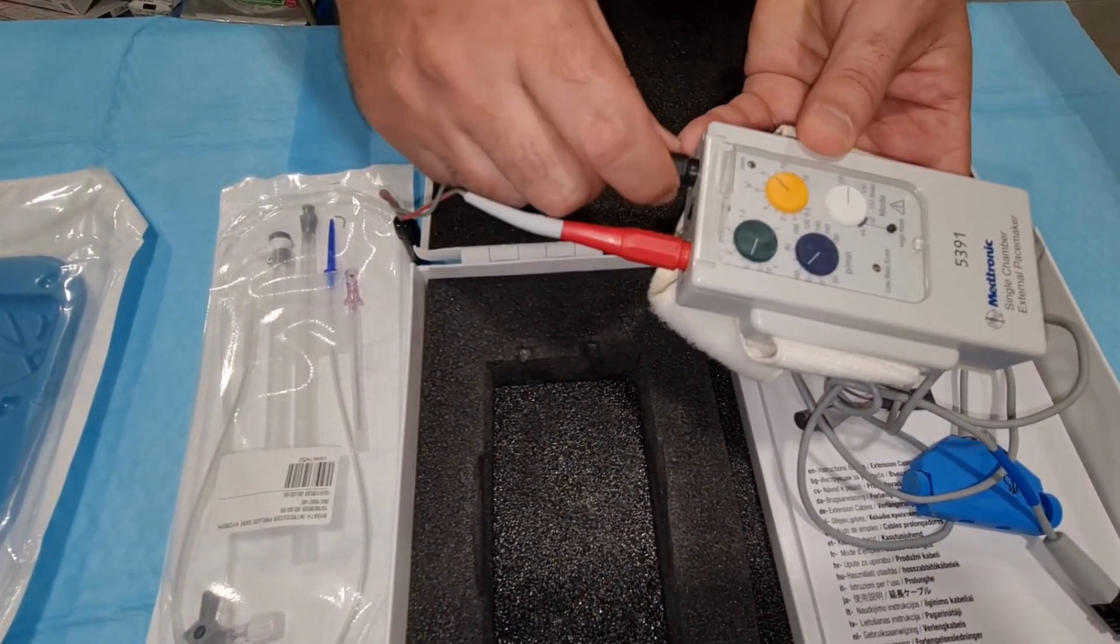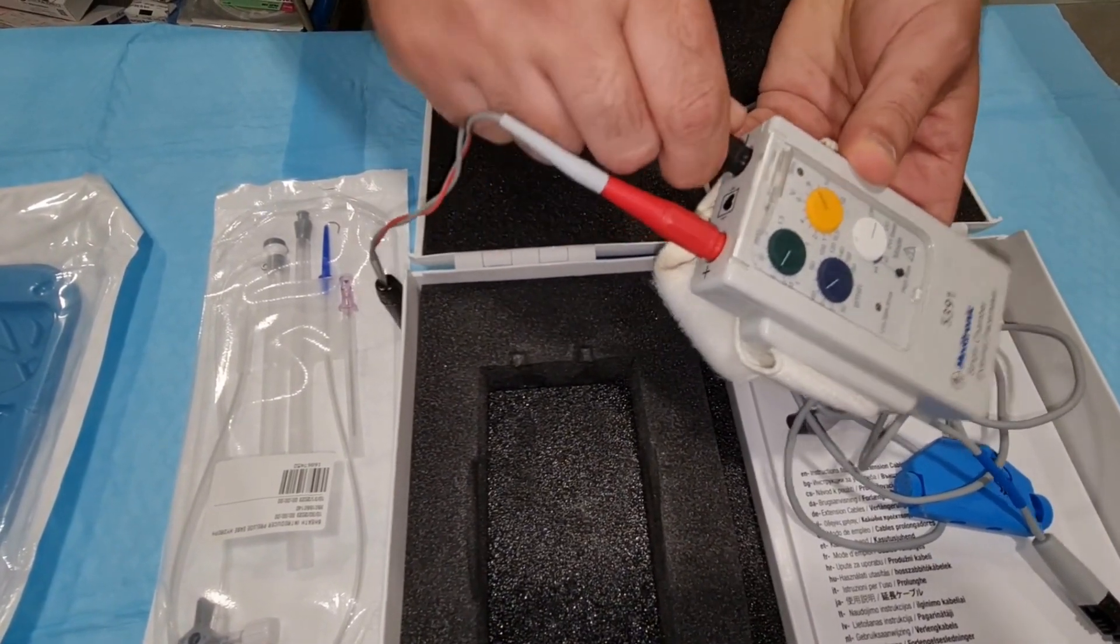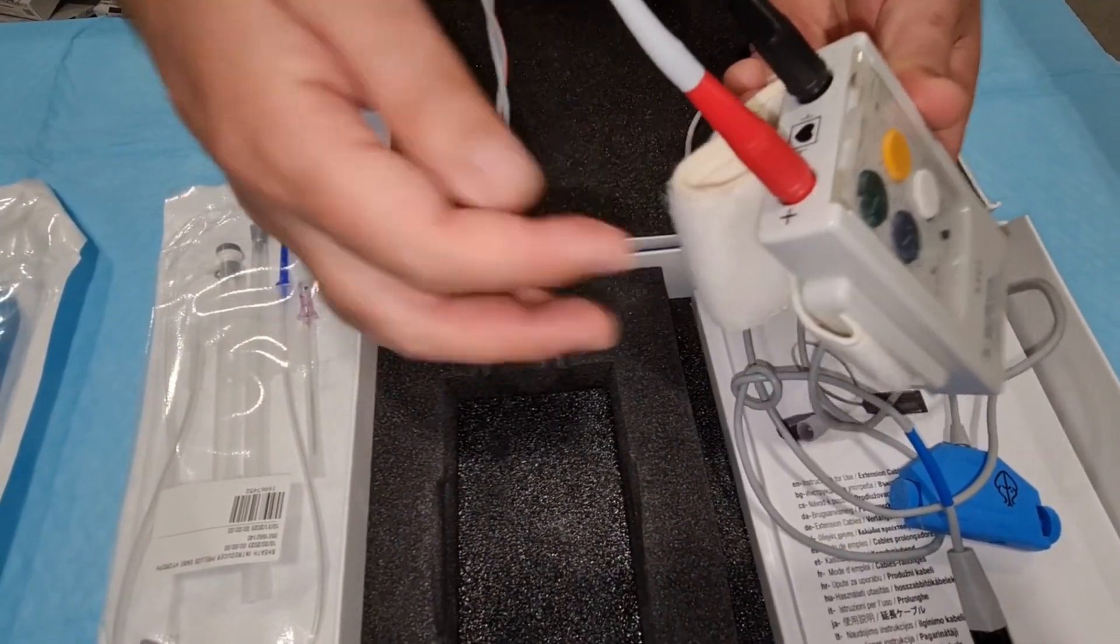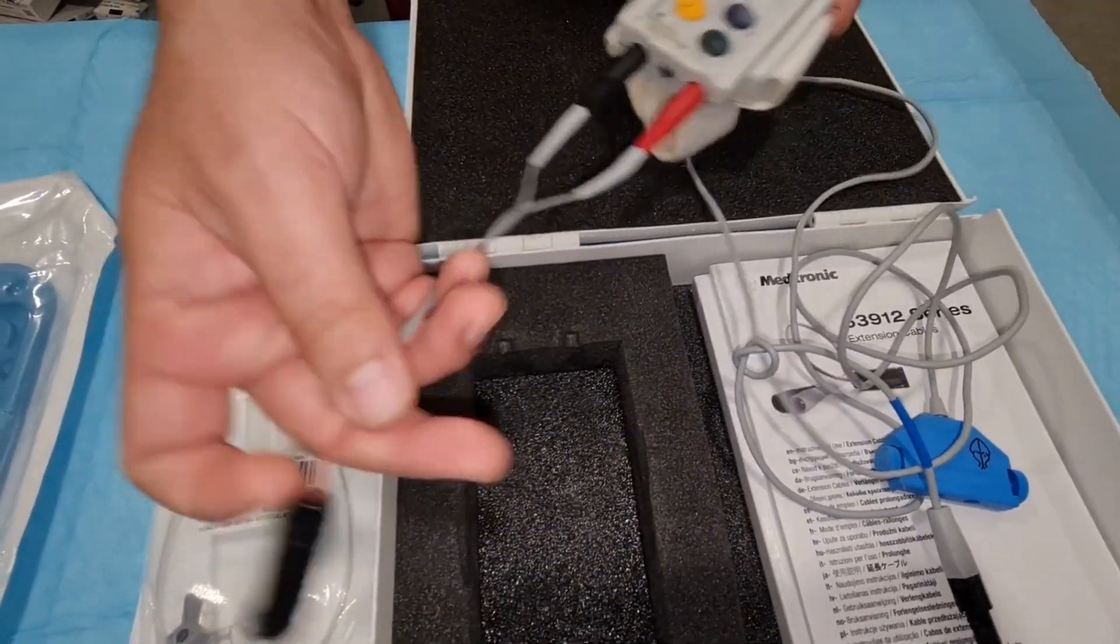Similarly to the next one, this is positive and negative. The black is negative and the red is positive. Now, we are connected with the connector.